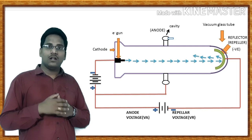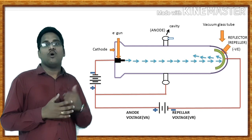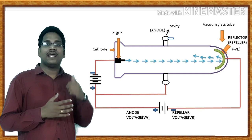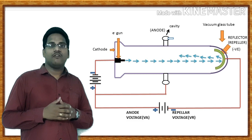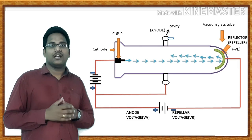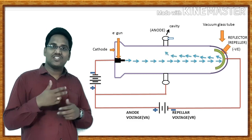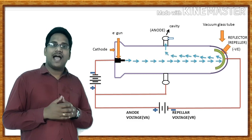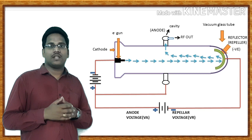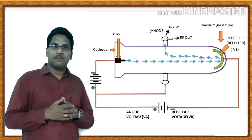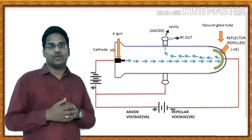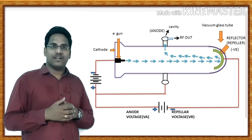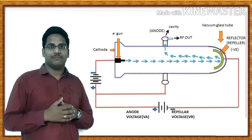The velocity-modulated electrons must travel in a backward path in order to provide feedback. All the electrons get bunched while returning to the catcher cavity. Therefore, at the time of returning, the bunched electrons transfer their maximum energy to the catcher cavity, thereby causing oscillations inside the tube, and we get the RF output from the catcher cavity.